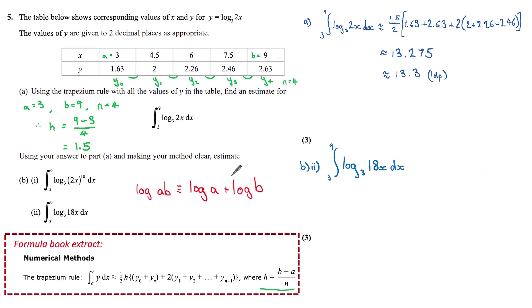So part b(ii), we're going to use a second log rule. This log rule is log ab is the same as log a plus log b. Ideally, as we've got an estimation for log base 3 of 2x, we would like to divide this 18x by 2x so that we can use the answer in part a. And we can divide 18x by 2x to get 9. So this is the same as log base 3 of 9 plus log base 3 of 2x dx.